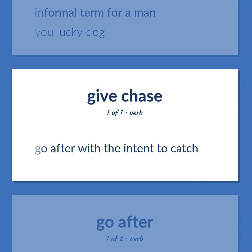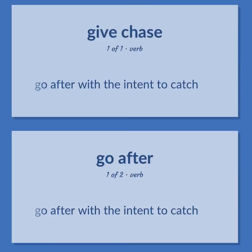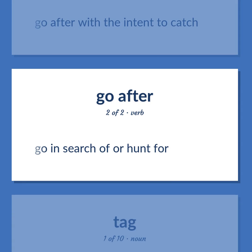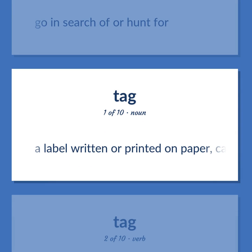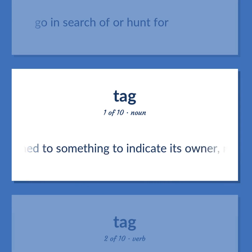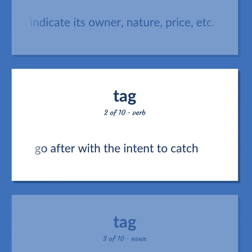Dog (verb): Go after with the intent to catch. Go after with the intent to catch. Go in search of or hunt for. Tag: A label written or printed on paper, cardboard, or plastic that is attached to something to indicate its owner, nature, price, etc. Go after with the intent to catch.